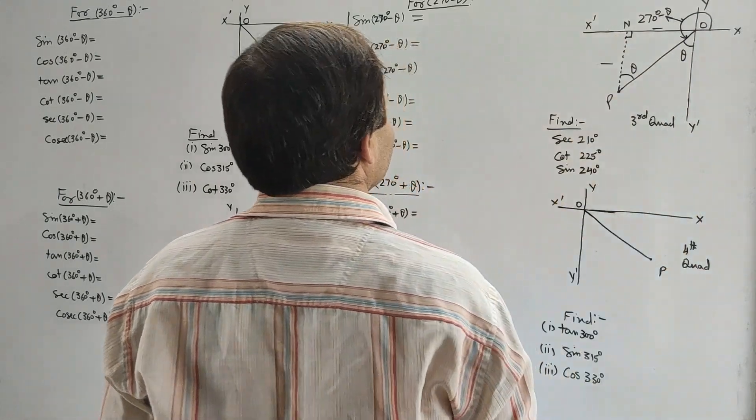Similarly, for cot(270° - θ): in the third quadrant, tan is positive. In the case of 270°, there is interchange of perpendicular and base. So cot(270° - θ) = tan θ. For sec(270° - θ): in the third quadrant sec is negative, and since it is the case of 270°, sec will interchange with cosec, giving minus cosec θ. For cosec(270° - θ): cosec in the third quadrant is negative, and cosec interchanges with sec, giving minus sec θ.